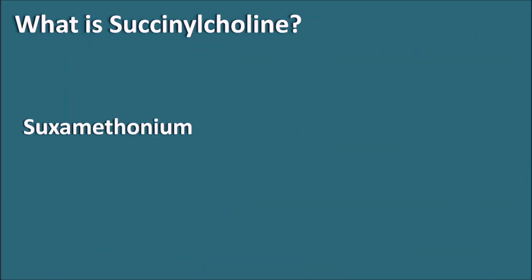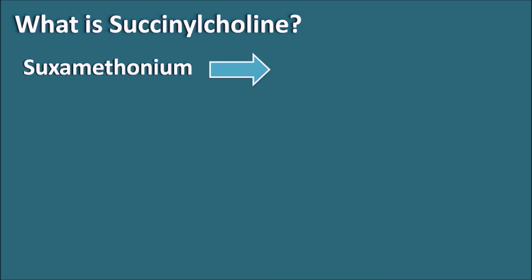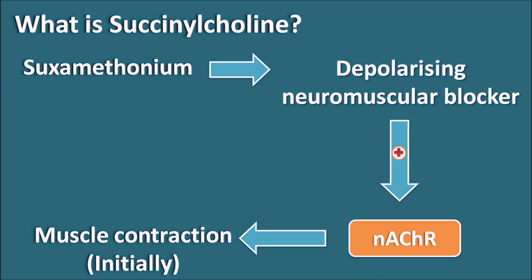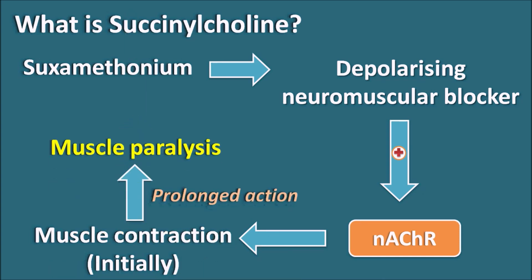Succinylcholine is also called suxamethonium and it is a depolarizing neuromuscular blocker. It acts as an agonist on the nicotinic acetylcholine receptors present on the skeletal muscle. These nicotinic acetylcholine receptors are ionotropic receptors. When activated, they produce muscle contraction. Succinylcholine produces muscle contraction initially, followed by muscle relaxation, as it activates these receptors for a prolonged time, ultimately producing muscle paralysis. Because of frequent muscle contractions, calcium is more released from the sarcoplasmic reticulum, raising body temperature by heat generation.